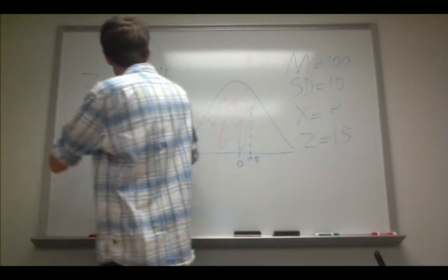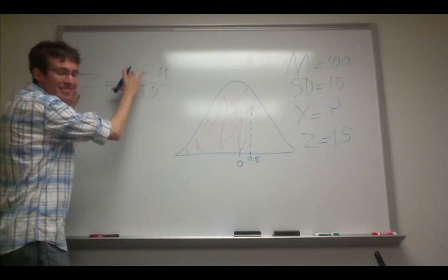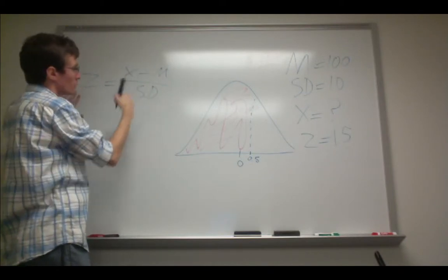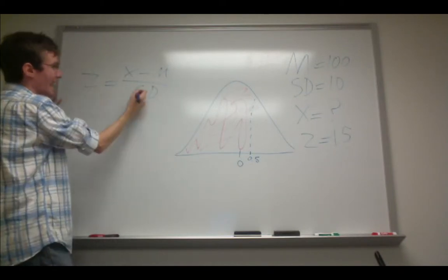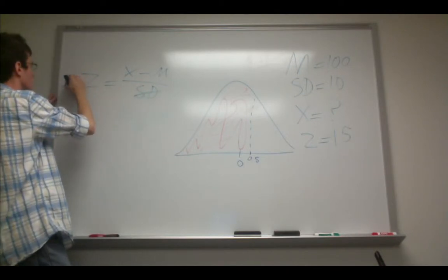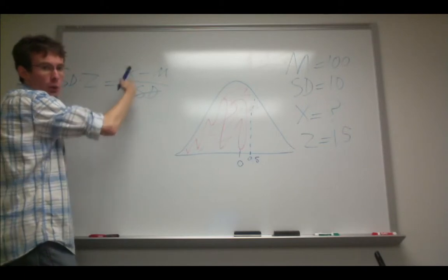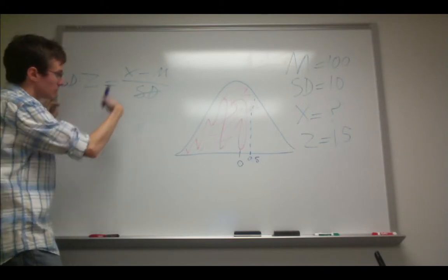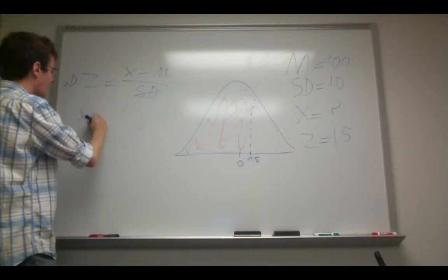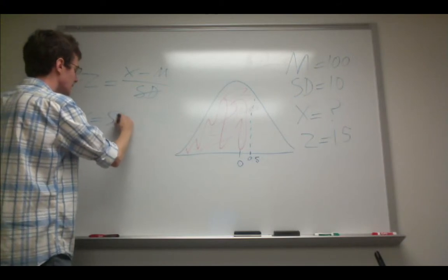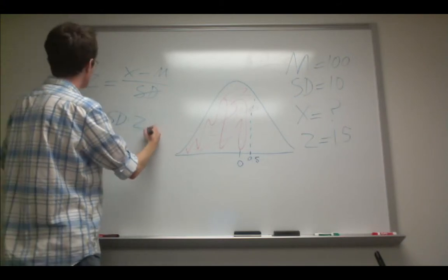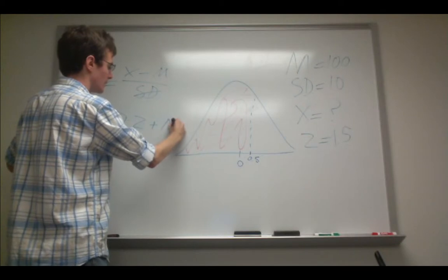What we need to do with this equation right here is isolate x. So first, we can multiply both sides by SD to make it cancel out, and then add by m on both sides in order to isolate x. So what this will look like is x equals SD times the z-score plus the mean, or m.